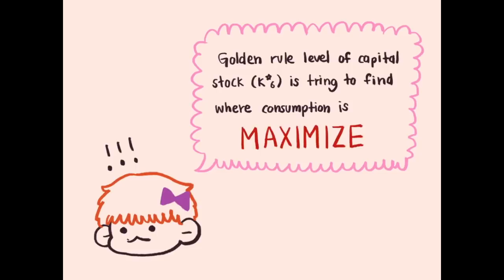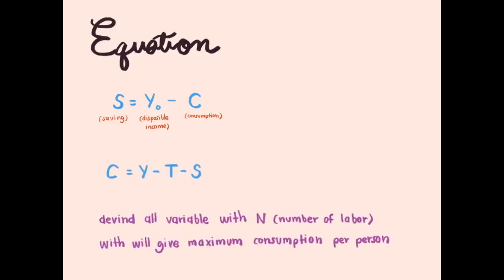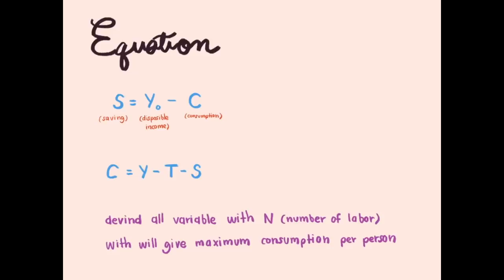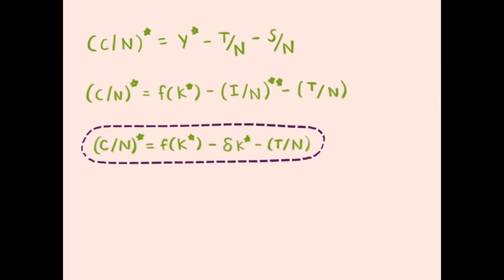Golden rule level of capital stock is trying to find where consumption is maximized. We can derive disposable income by 1 minus T, which is income and tax relatively. What we want to find is consumption, so we will substitute C with S. As we assume output equals to capital, so we change y-star to function of capital, and also saving equals to investment.